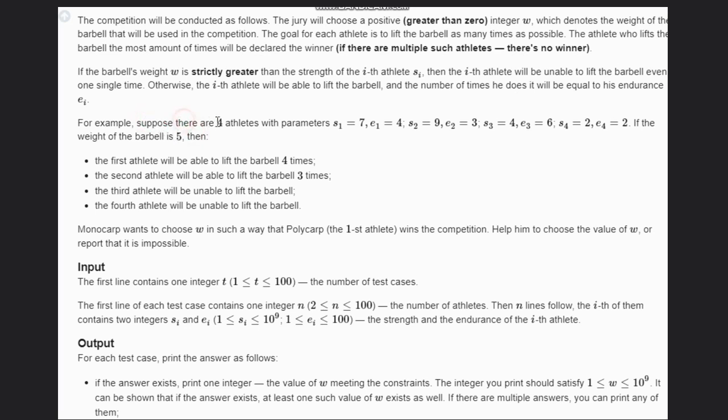In this case there are four athletes. First one has strength seven and endurance four, then second athlete nine and three, third is six and two, and fourth is four and four. The first athlete is the target, that is Polycarp, and he wants to win this competition.